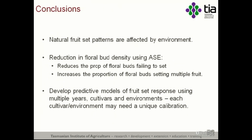In conclusion, it seems that natural fruit set patterns are affected by environment but there may be ways of explaining that relationship. Secondly, reducing floral bud density using spur extinction methods reduces the proportion of buds that fail to set, and increases the proportion setting fruit — particularly those setting multiple fruit — which may allow development of predictive models around fruit set response. We'll continue this work over a number of years to get a better understanding, which may be particularly useful for growers in a commercial sense.